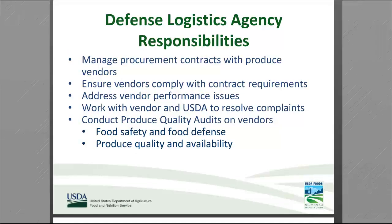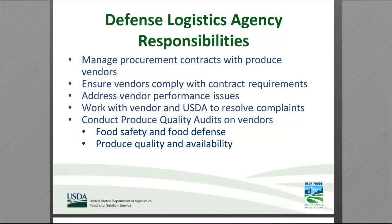Our partners at DLA manage the procurement contracts with produce vendors. DLA posts the solicitation, evaluates the responses, and awards the contracts. They also monitor the contracts to ensure vendors are complying with contract terms. When there are vendor performance issues, DOD takes action to ensure the vendor is in accordance with the standards set forth in the contract. When ITOs submit complaints to DLA for quality or vendor performance issues, DLA works with the vendor and USDA to resolve them. Lastly, DLA conducts produce quality audits on vendors to ensure customers are receiving safe produce, adherence to food safety and food defense requirements, and compliance with produce quality standards and product availability.